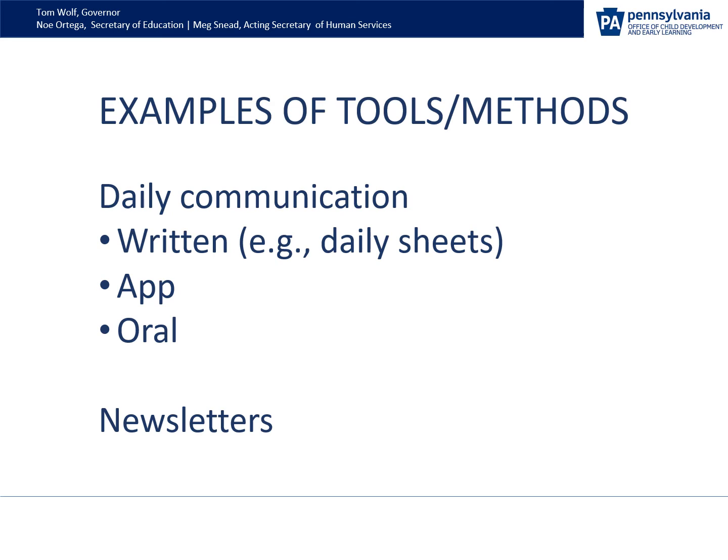Here are some tools and methods to communicate with families. You want to communicate daily, and there are a couple of ways to do that. In writing, you could use daily sheets, hang a poster outside the classroom door, or use a program app. If communicating with a daily sheet or an app, be sure to include a specific comment about their own child. Written communication should always be positive — people can keep anything written and could potentially use it against you; anything you write could be taken literally.